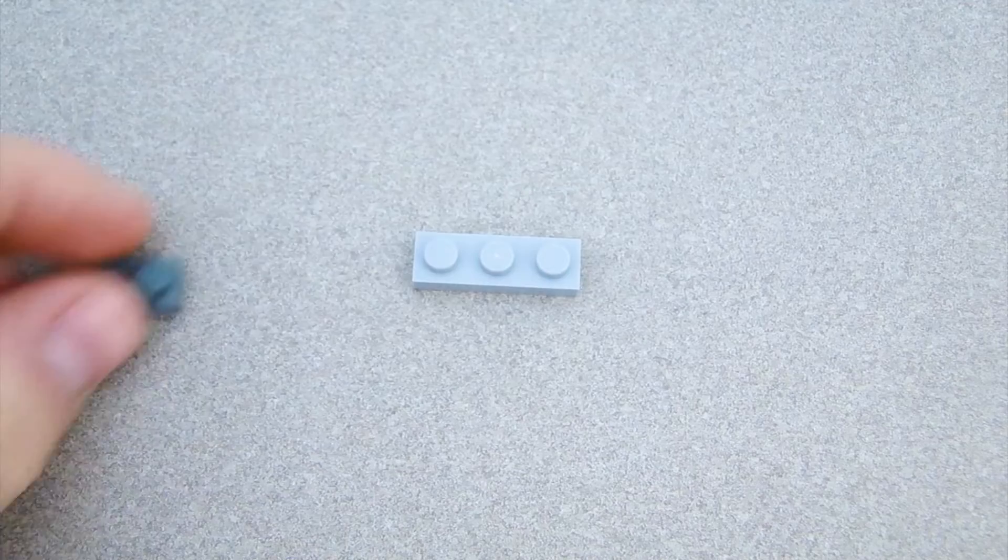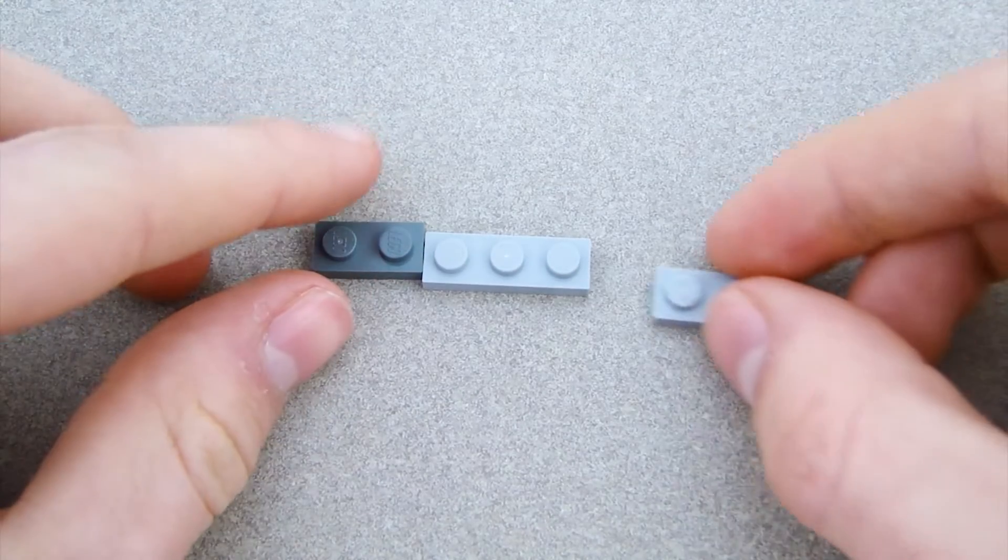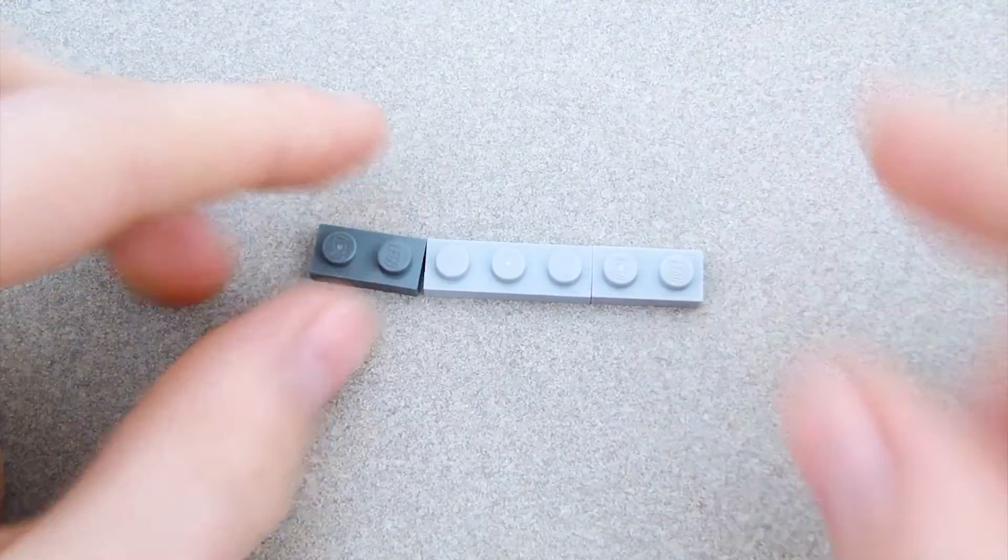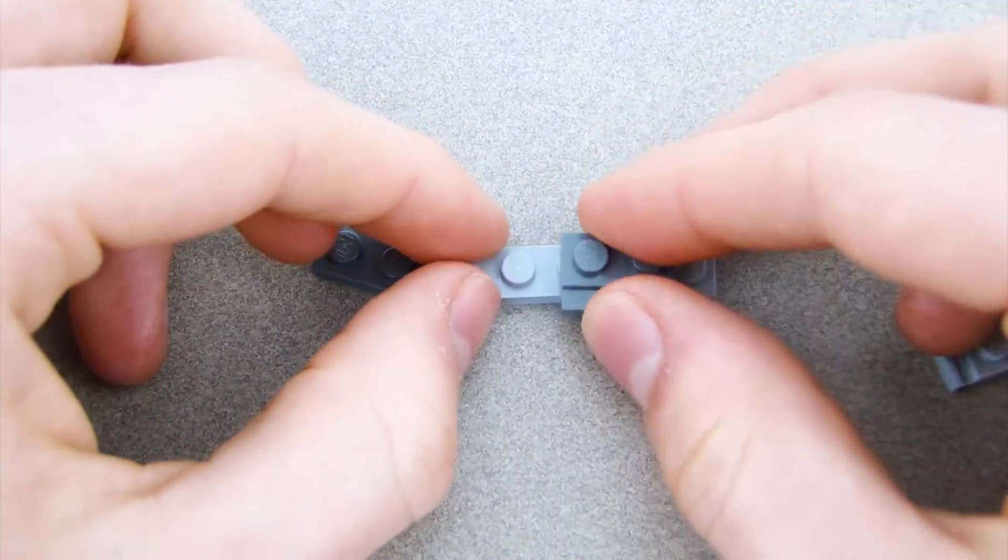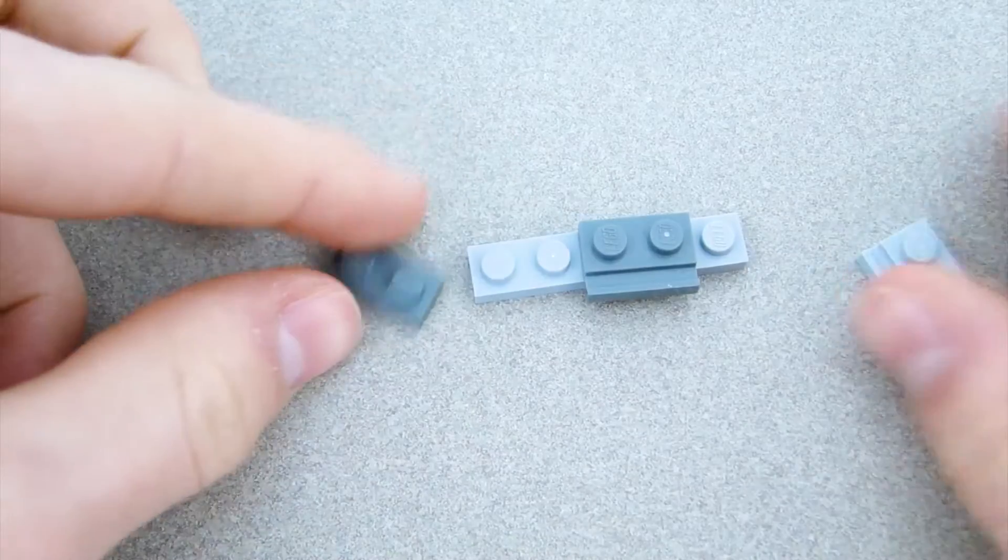Start off, get this piece and put a dark bluish gray 1x2 on the side, and a light bluish gray 1x2 on the other side. Then on top of that, on this side without the dark bluish gray one, put this piece, which hangs over slightly, as you can see.